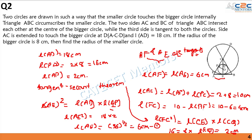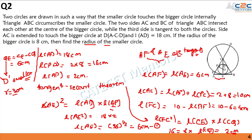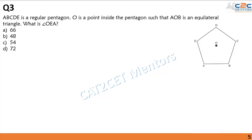Since QE = CE − C_cube (they are collinear), QE = 6 cm. But QE is the diameter of the smaller circle, so the radius of the smaller circle equals 3 cm. That is our answer.